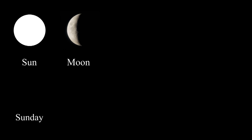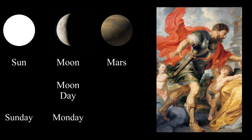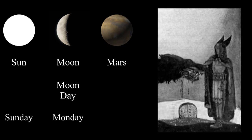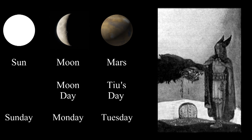So here's how this works. Sunday comes from the sun. Monday comes from the moon — Moon Day turned into Monday. Tuesday comes from Mars, the Roman god of war. The Norse had their own god of war, pronounced Tyr or Tu. So we have Tuesday.